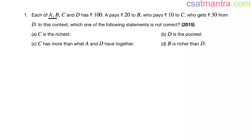Each of A, B, C and D has 100 rupees. A pays 20 rupees to B, who pays 10 rupees to C, who gets 30 rupees from D. In this context, which one of the following statements is not correct? This is a 2015 question, my friends. This question is from algebra chapter.